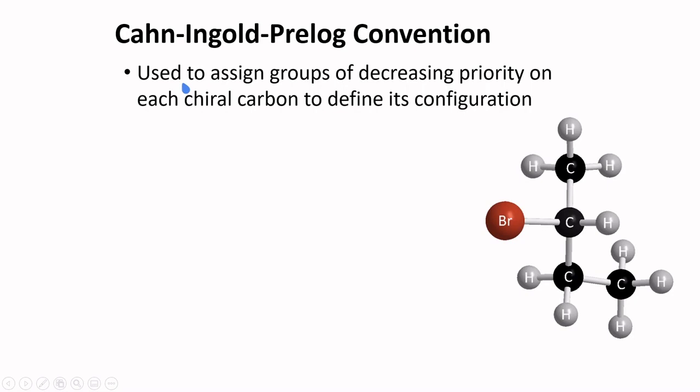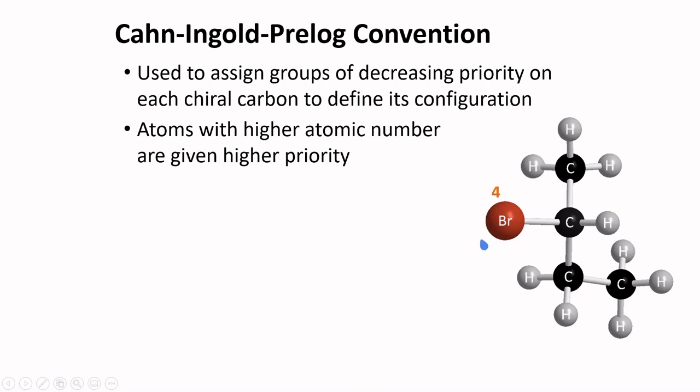To name compounds with chirality centers, we use the Cahn-Ingold-Prelog convention. This convention is used to assign groups of decreasing priority on each chiral carbon to define its configuration. You already encountered Cahn-Ingold-Prelog convention in identifying the E or Z stereoisomers of alkenes. Again, atoms with higher atomic number are given higher priority. In the case of this compound, bromine has the highest atomic number, and so we give it the highest priority.